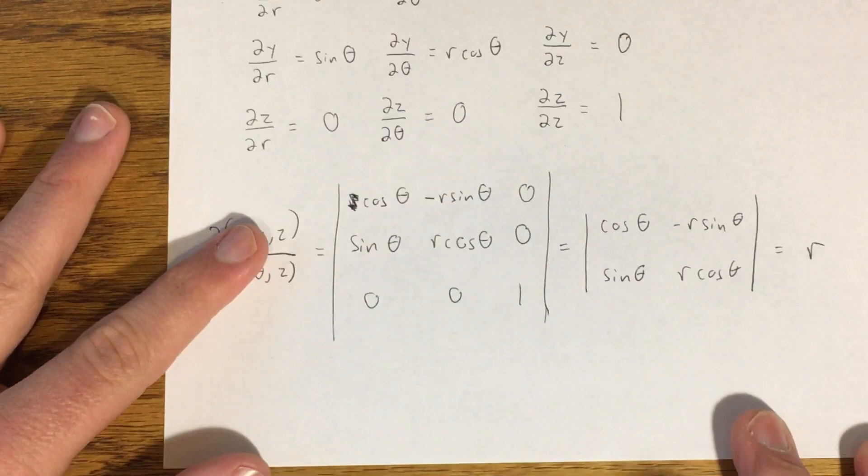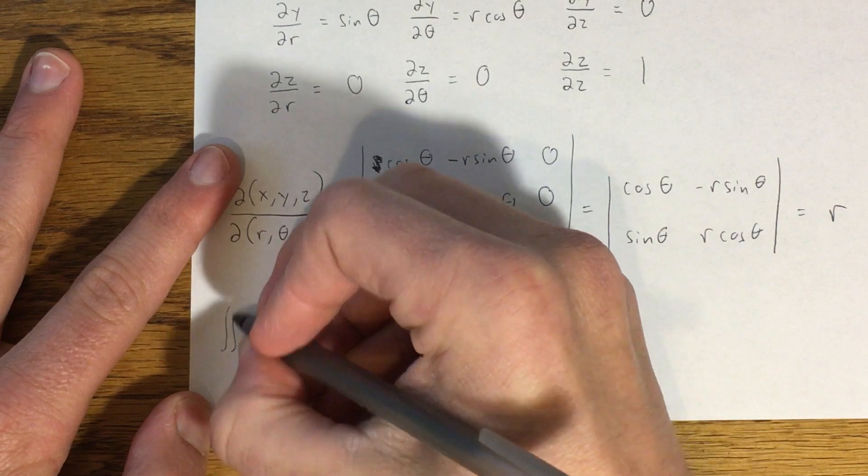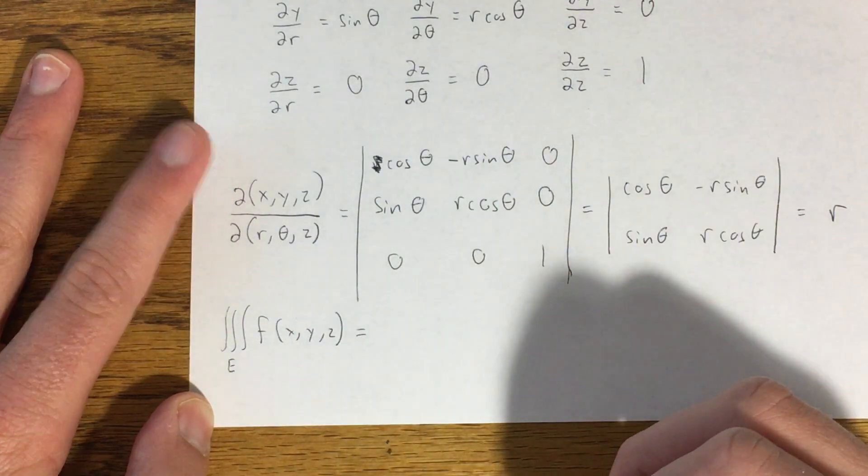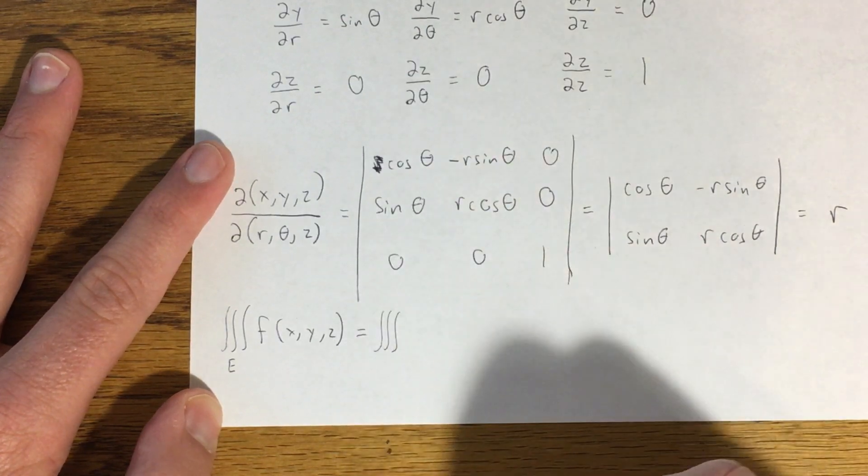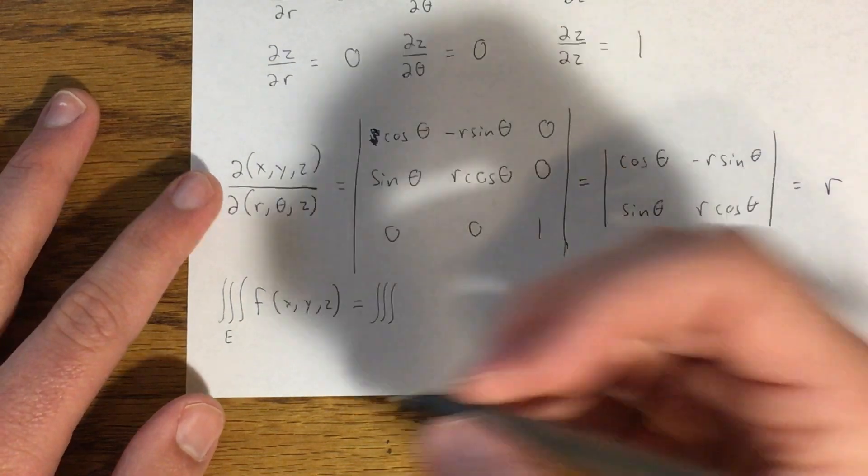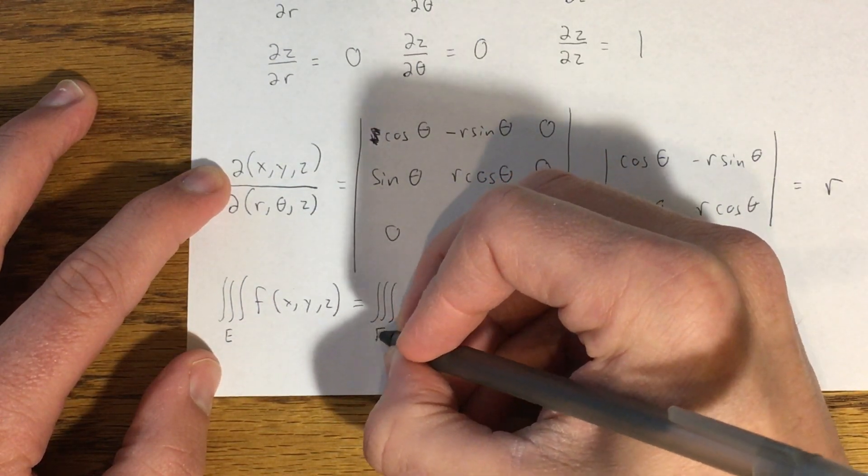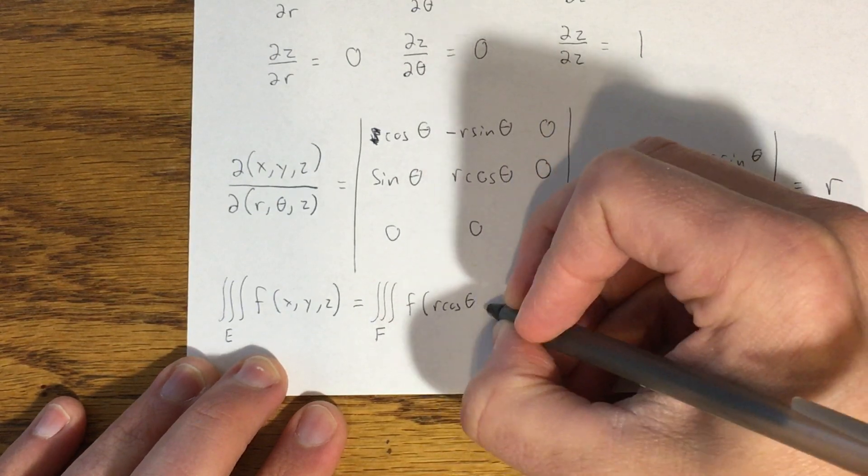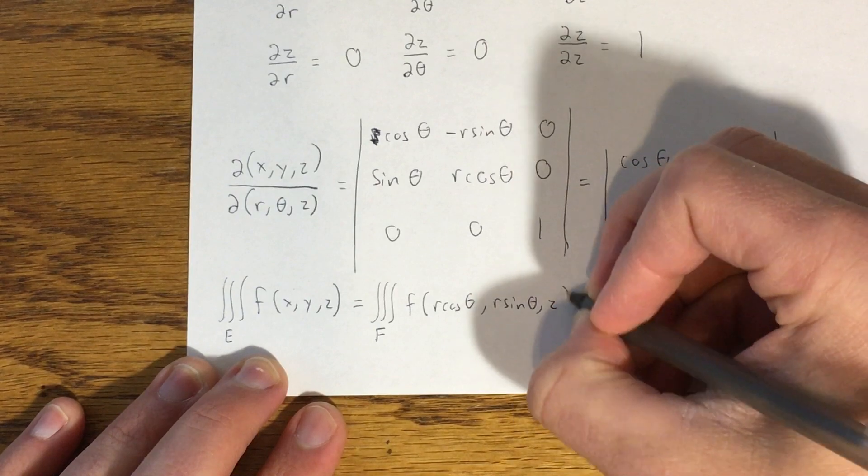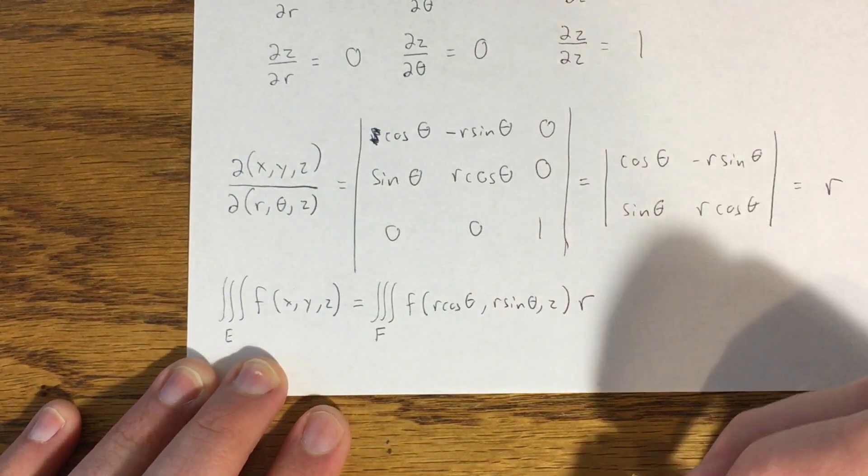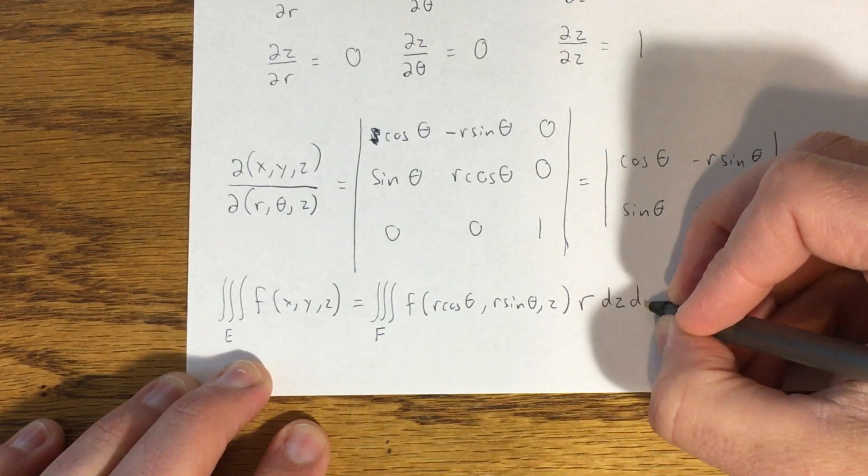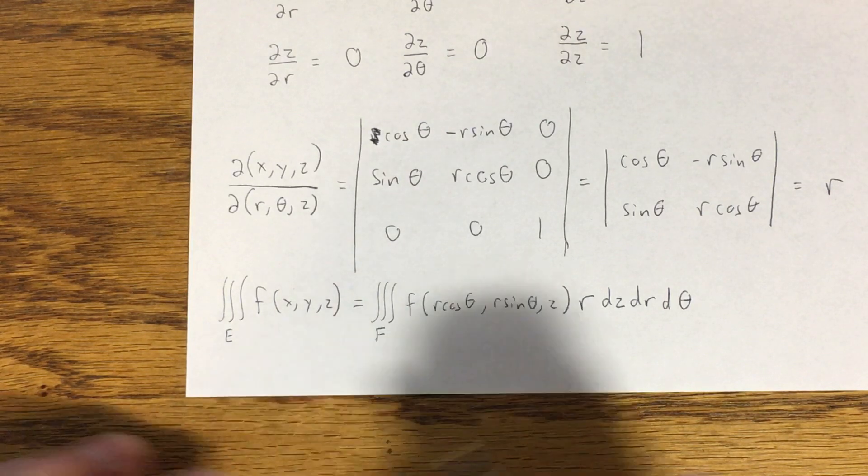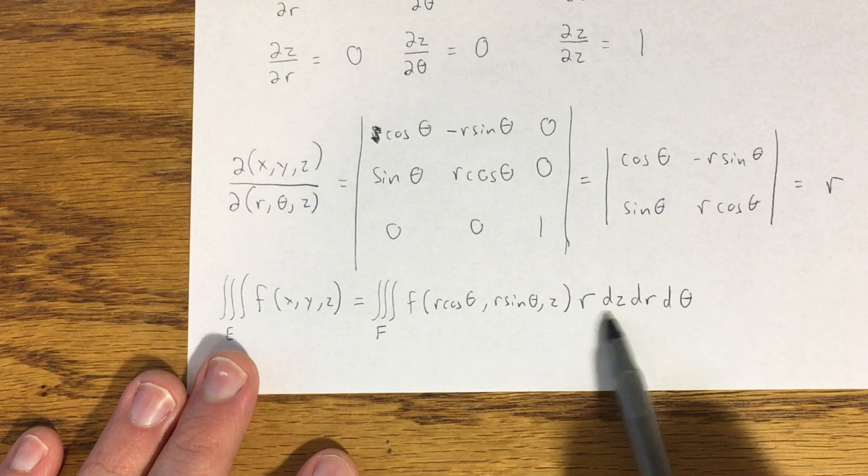Okay? That means that my triple integral over e of f of x, y, z is going to be equal to a triple integral over a region in cylindrical coordinates. I'm just going to say, let's suppose this region is called capital F. Not to be confused with the lowercase f that we're using for our function. f of r cosine of theta, we make our substitutions for x, y, and z here, r sine of theta, z, times my Jacobian, which we found to be r, times dz, dr, d theta. That's exactly our conversion into cylindrical coordinates that we've talked about already, but using the Jacobian to confirm that we've been doing it right this whole time.